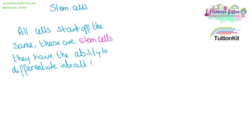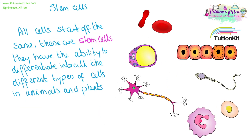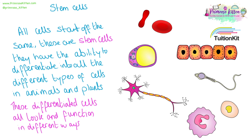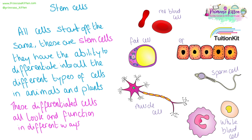All cells start off the same as stem cells. These have the ability to differentiate into all of the different types of cells that we have. These differentiated cells all look and function very different to each other. For example, these cells all started off looking the same, but red blood cells, fat cells, muscle cells, white blood cells, sperm cells, and epithelial cells all look very different, and they are all specialized to their function.